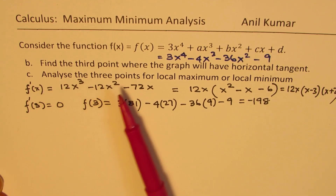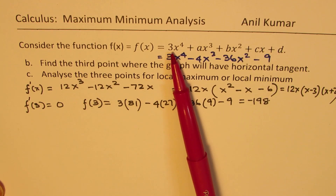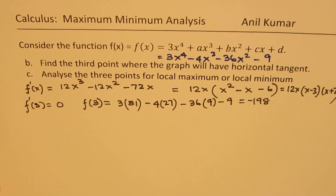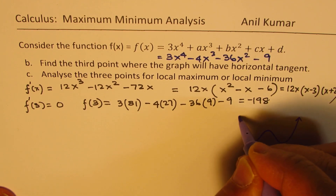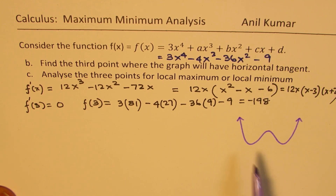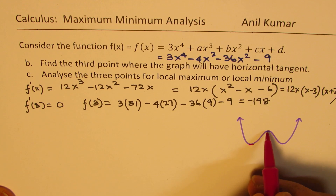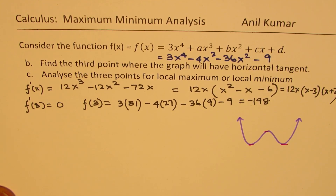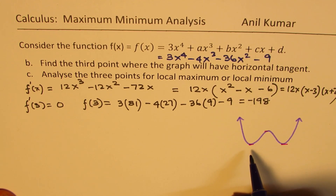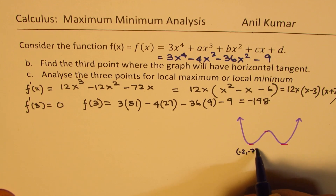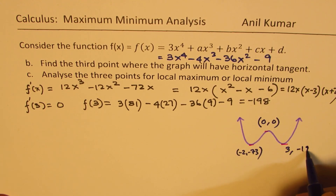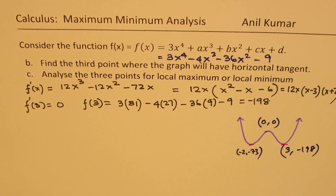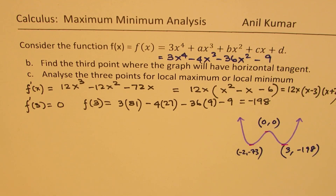For Part C, since this is a quartic equation with a positive leading coefficient, we expect a graph with two local minima and one local maximum. The three turning points, going left to right, are: (-2, -73), (0, -9), and (3, -198). From the graph shape we can see local minima at the two extremes and a local maximum at the origin.